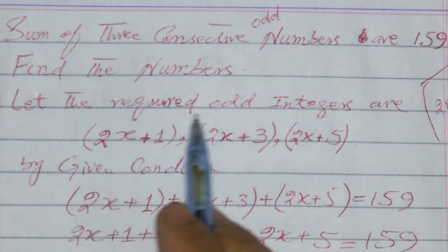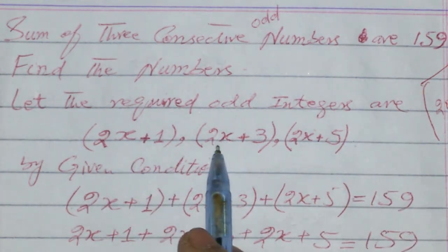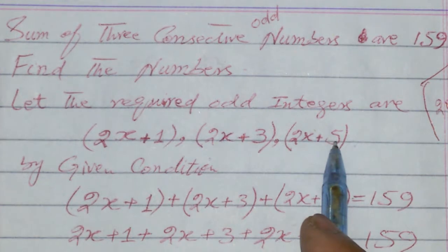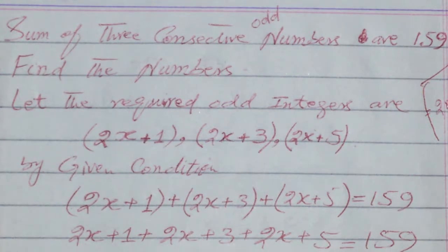Let the required odd integers be 2x+1, 2x+3, 2x+5. We could also define them as 2n+1, 2n-1, where n belongs to the set of integers.